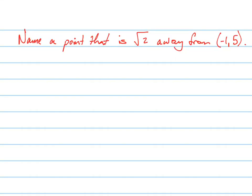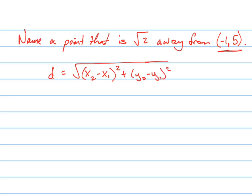This problem says: name a point that is √2 away from (-1, 5). We know the distance formula is the square root of (x2 minus x1) squared plus (y2 minus y1) squared. What we have is the distance, and we have an x and a y — let's call it x1 and y1.